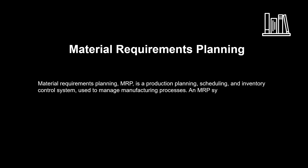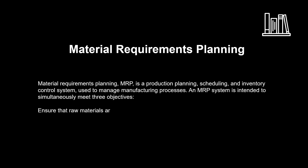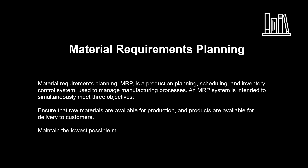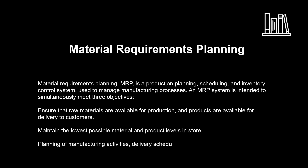An MRP system is intended to simultaneously meet three objectives: ensure that raw materials are available for production and products are available for delivery to customers; maintain the lowest possible material and product levels in store; and planning of manufacturing activities, delivery schedules, and purchasing activities.